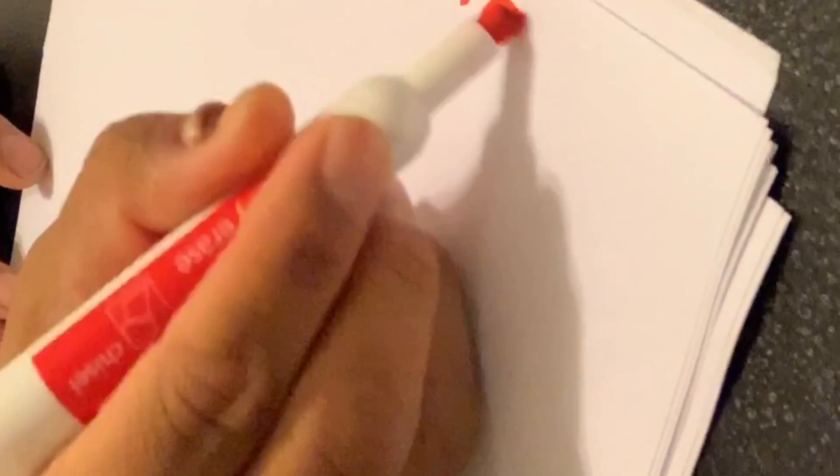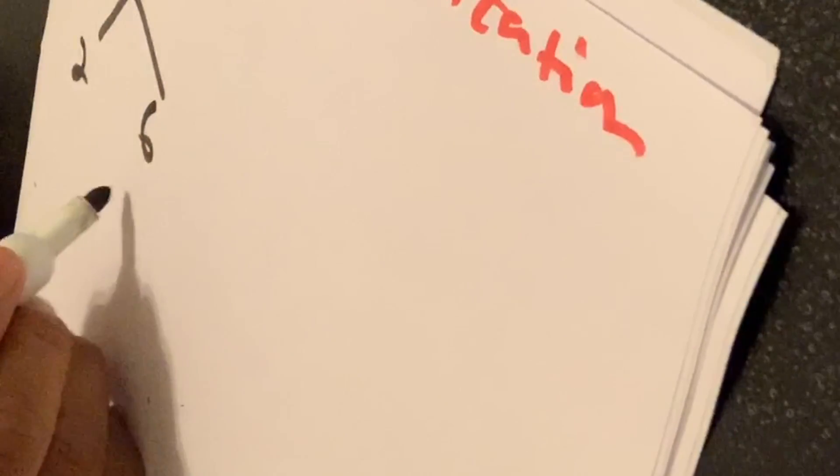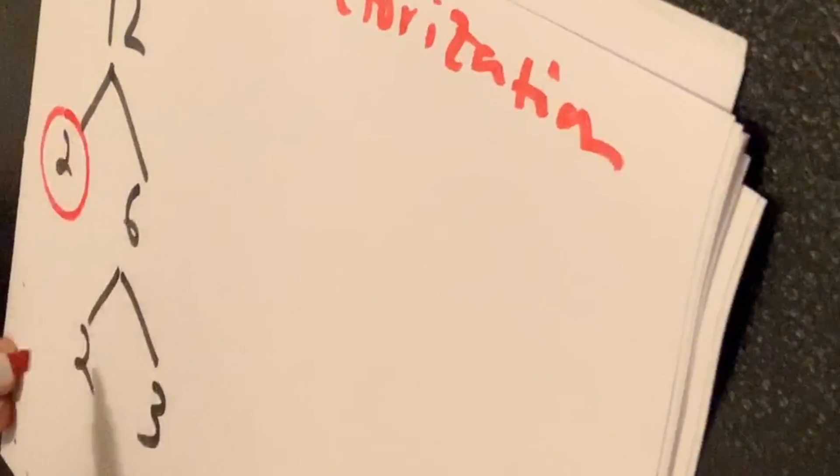Now let's move on to prime factorization. What does prime factorization mean? Breaking a composite number into all of its building blocks — making a composite number into its atoms, where the atoms are prime numbers. Let's do twelve. What two numbers make twelve? Two times six. Is this the prime factorization? No — six can be broken down further into two times three.